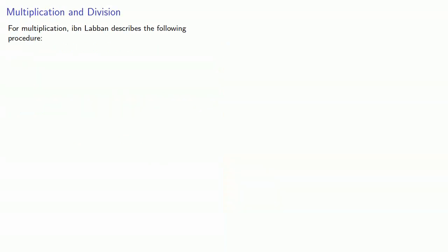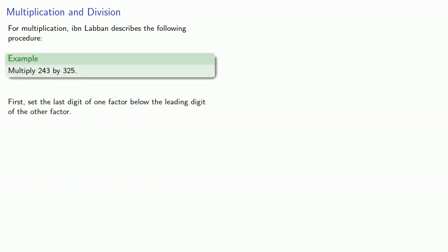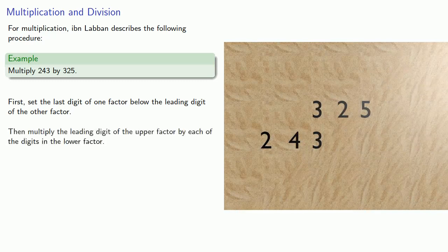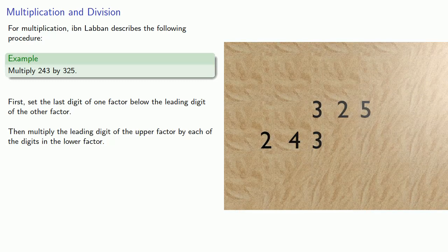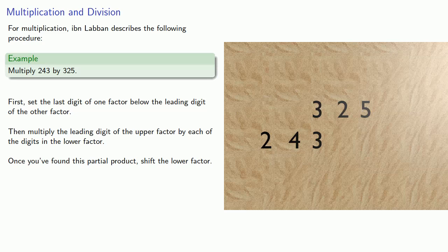For multiplication and division, Ibn Laban describes the following procedure. To multiply 243 by 325, first set the last digit of one factor below the leading digit of the other factor. Then multiply the leading digit of the upper factor by each of the digits in the lower factor. And once you've found this partial product, shift the lower factor.